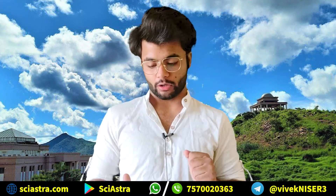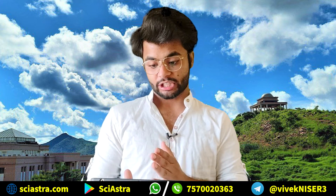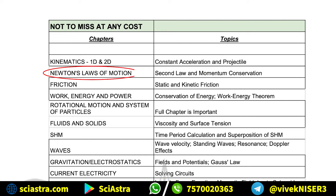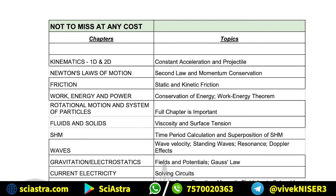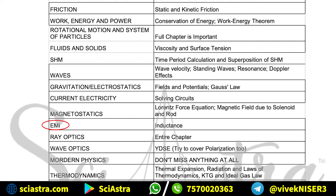So, what are the chapters you should not miss at any cost? As you can see on the left side, chapters: Kinematics — 1D and 2D motion — the most important topics are constant acceleration and projectile motion. Then comes Newton's Laws of Motion, where the most important topics are the second law of motion and momentum conservation. Similarly, for Gravitation and Electrostatics, the most important topics are fields and potentials, specifically Gauss's Law.